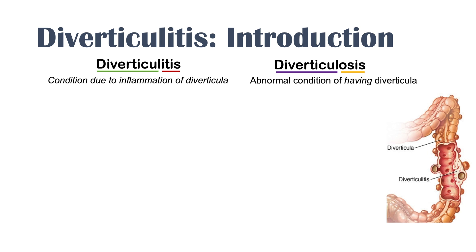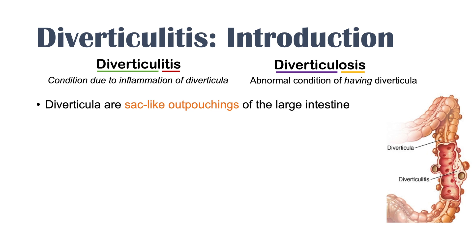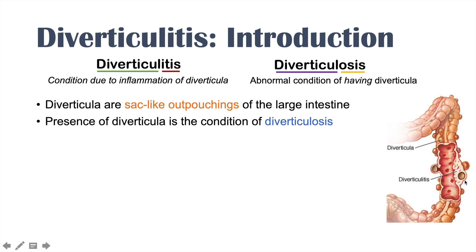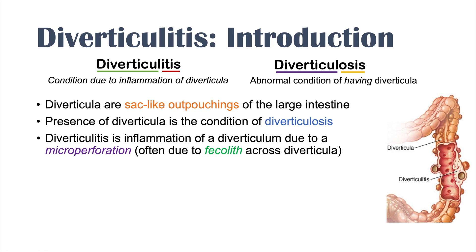Diverticula are sac-like outpouchings of the large intestine. You can see in this image here are these little outpouchings, these little bulges in the large intestine — these are diverticula. Having these simply means you have diverticulosis. If these become inflamed, then you have diverticulitis. Diverticulitis is inflammation of a diverticulum due to a microperforation, generally speaking.